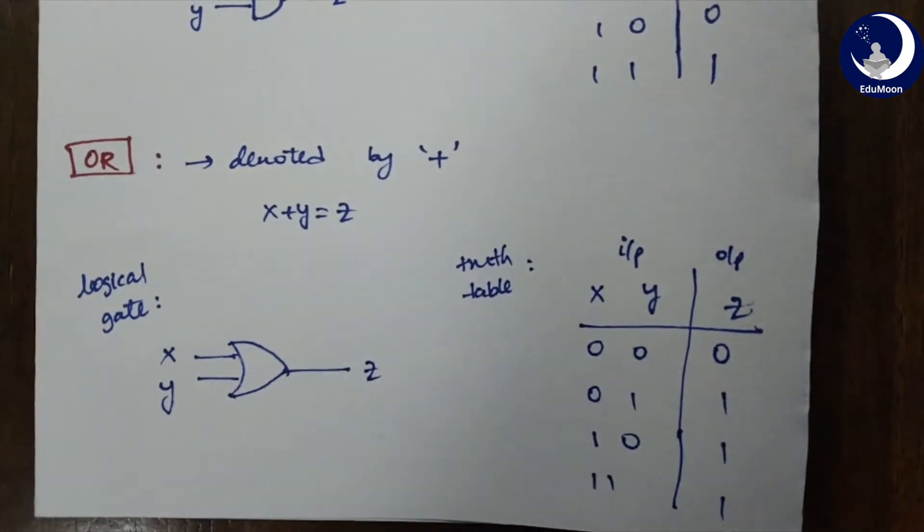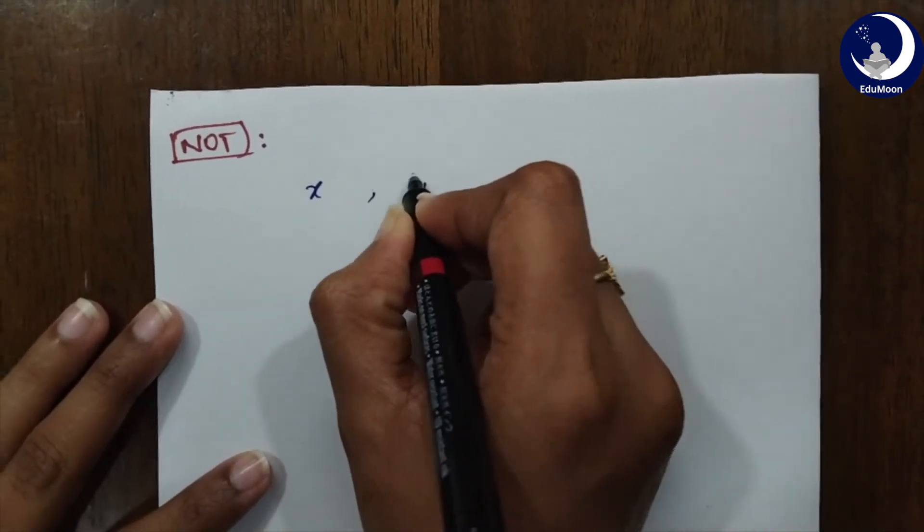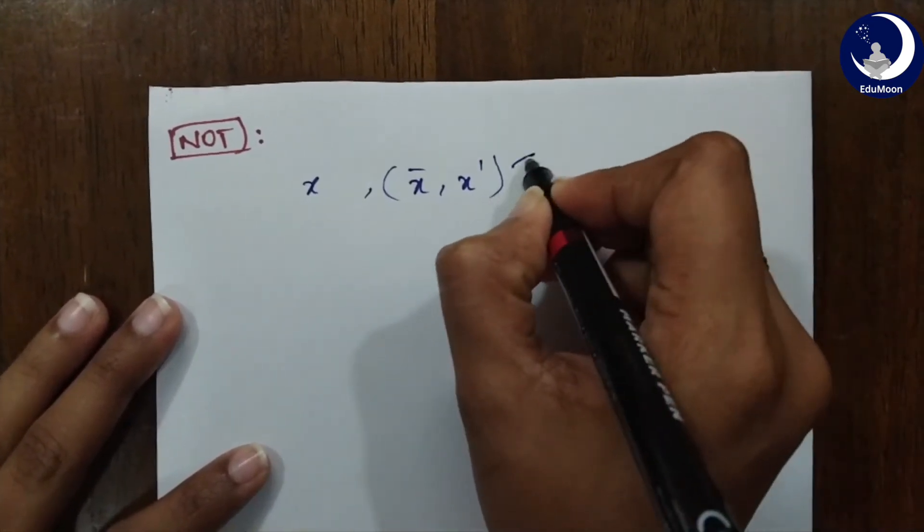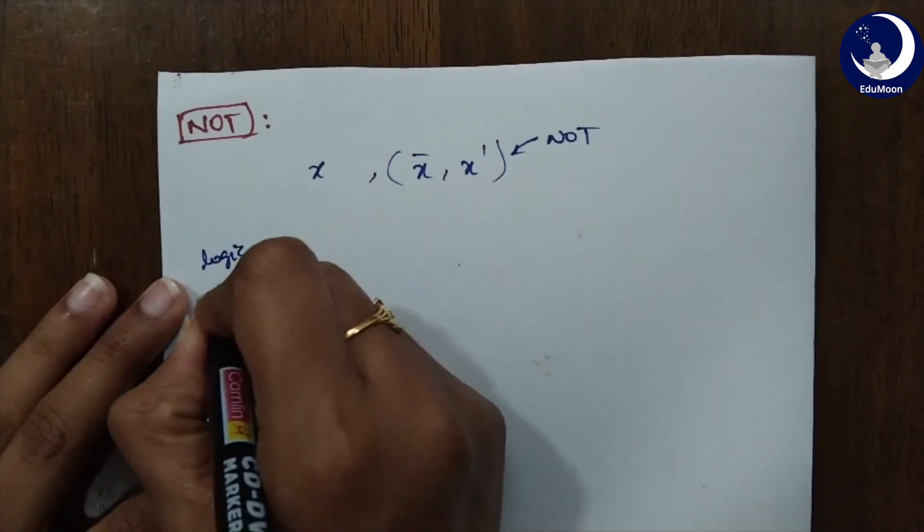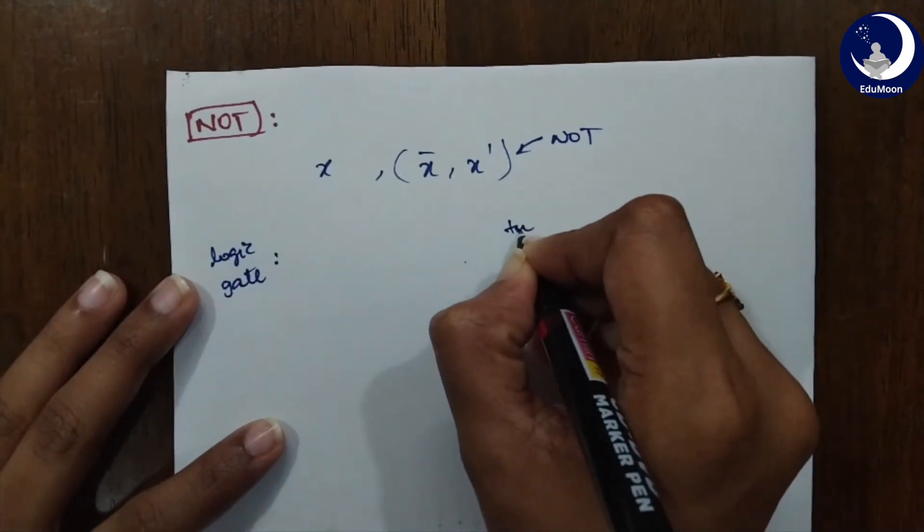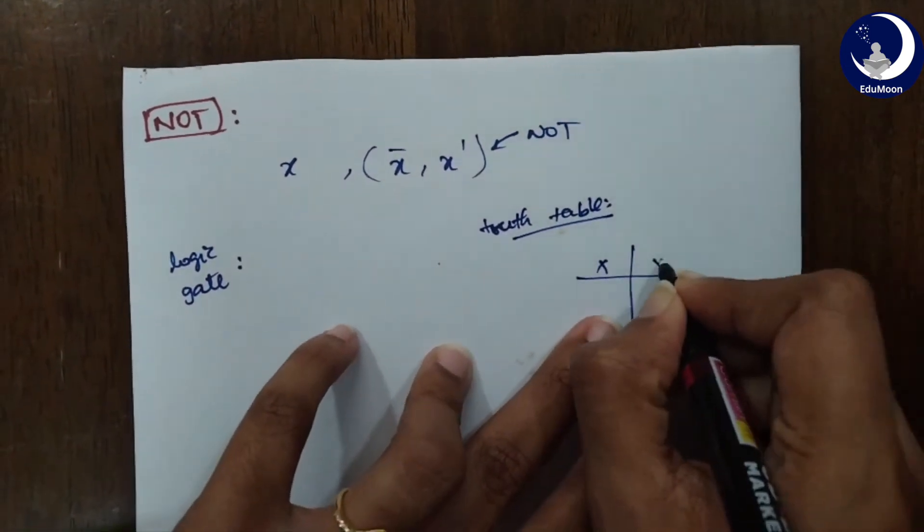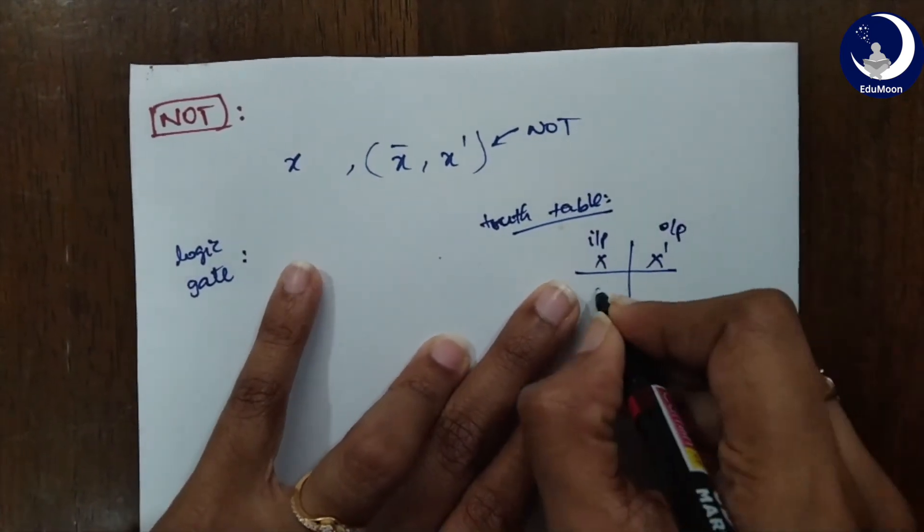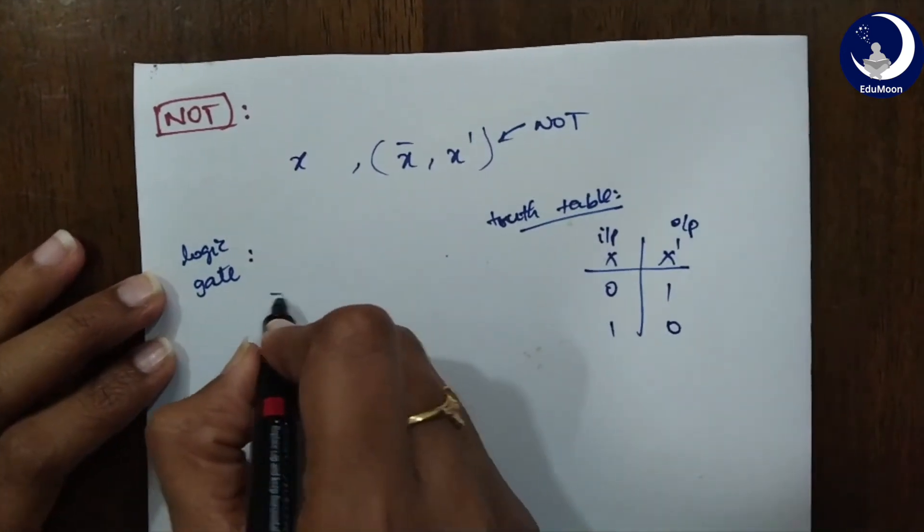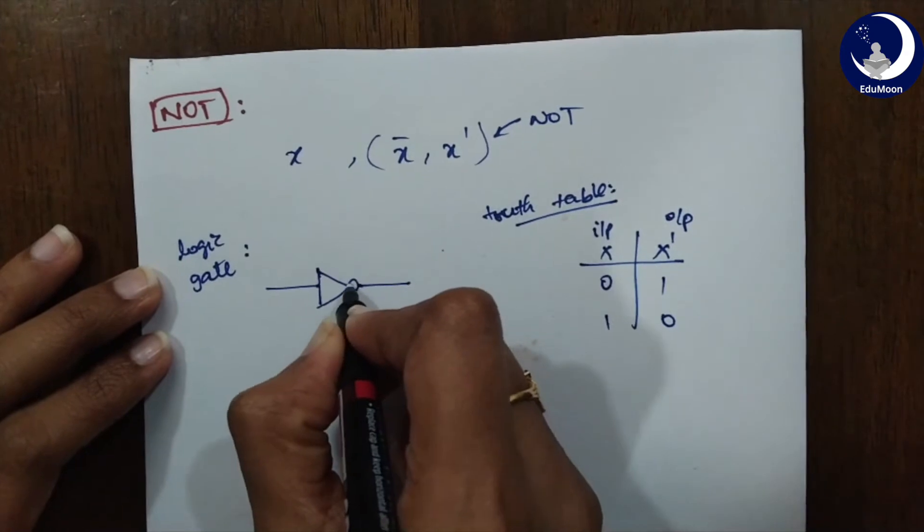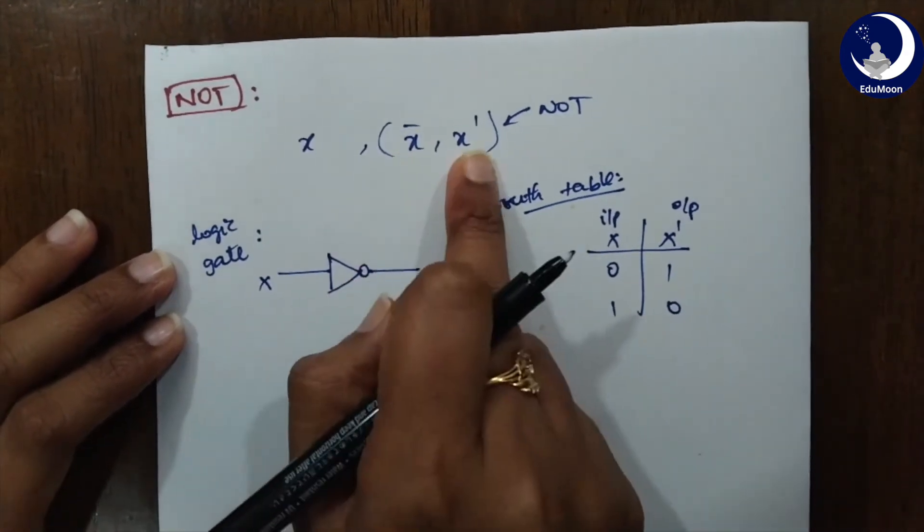Now, let's look into the NOT gate. For a given X, it can be X bar or X prime like this. Both are the representations for NOT. What is a NOT gate? NOT is nothing but an inverted form. If you look into its logic gate and truth table, we have only one input here. This is an input and this is an output. If it's 0, inverted of 0 is 1 and if it's 1, the inverted form of 1 is 0. The logic gate can be represented as this bubble stands for the inversion. So, if this is X, this will be your X bar or X prime. Both of them stand the same.